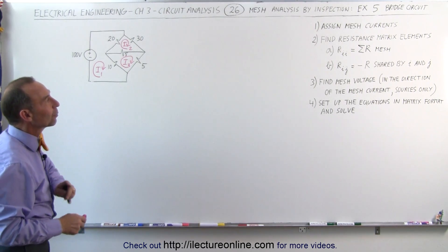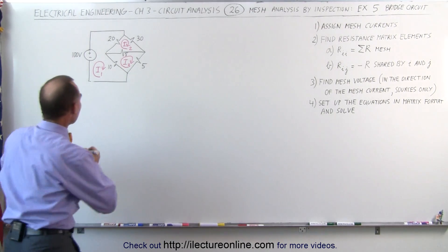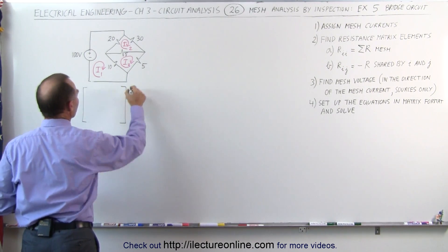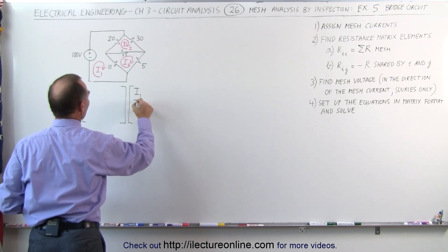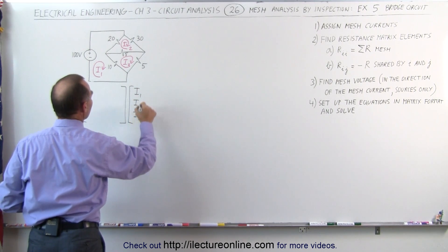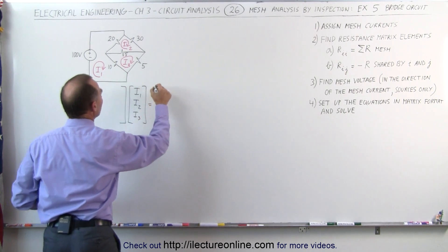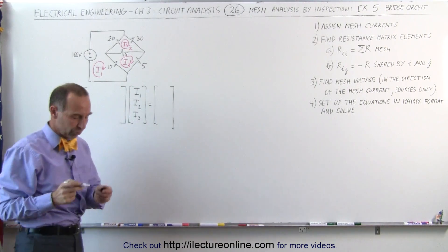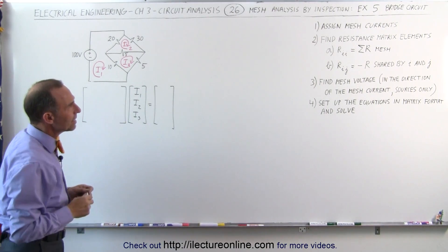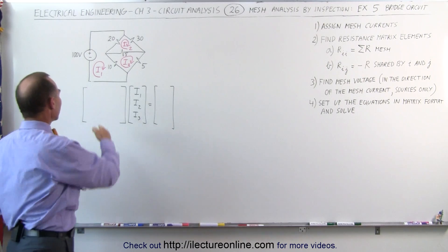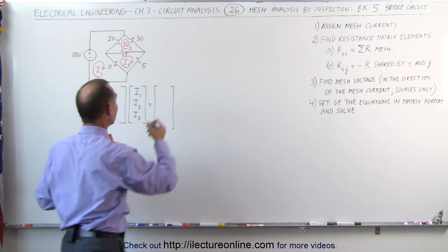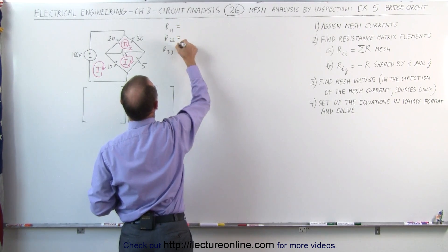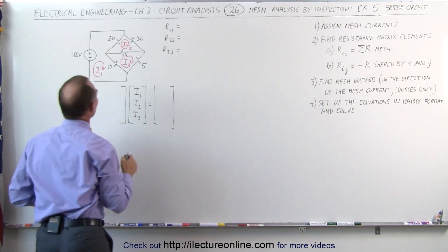That means there's three unknowns, we'll end up with a three-by-three matrix. The next step is to find the resistance matrix elements. We know that the matrix is going to look something like this, a three-by-three matrix times the three unknown currents I1, I2, and I3, and that's going to be equal to the voltages that we find when we sum up all the voltage sources going around each of the loops. But let's first find the resistance matrix elements. We begin with the diagonal elements, which means we need to find R11, R22, and R33.